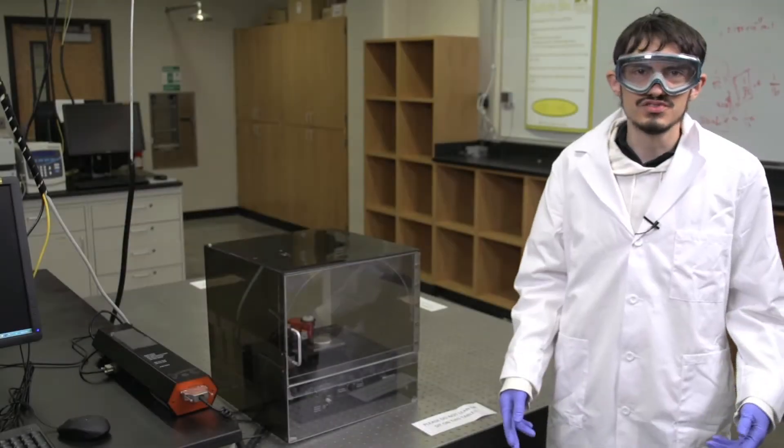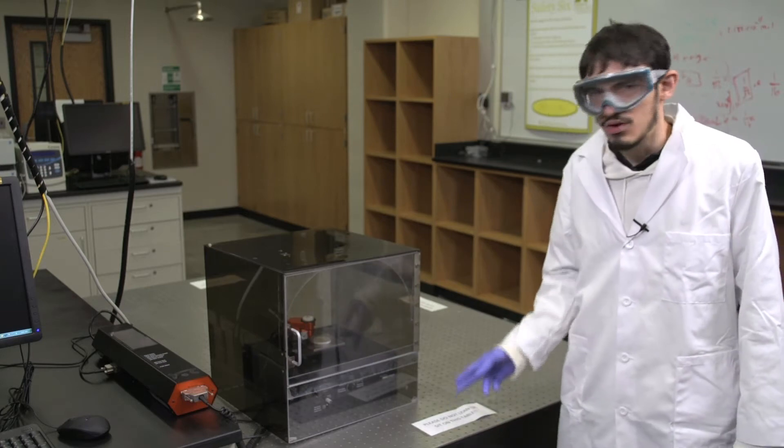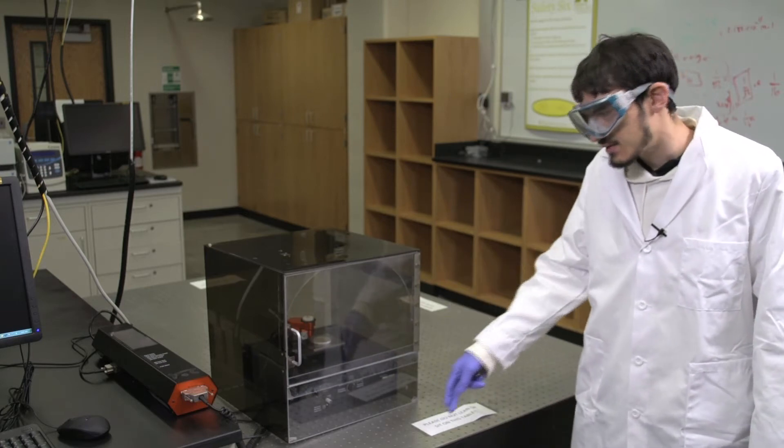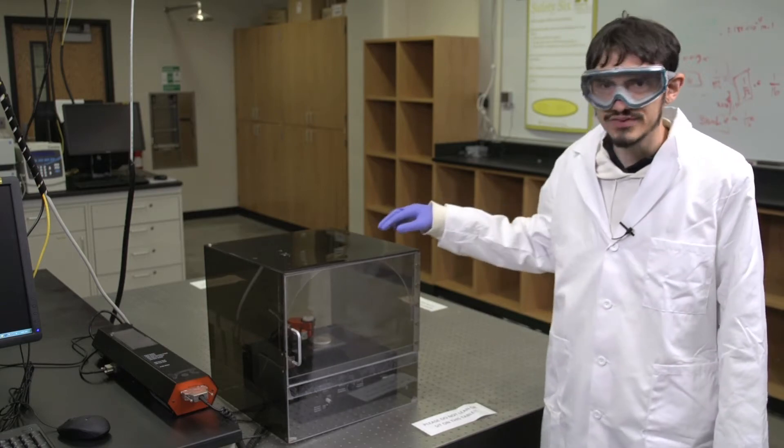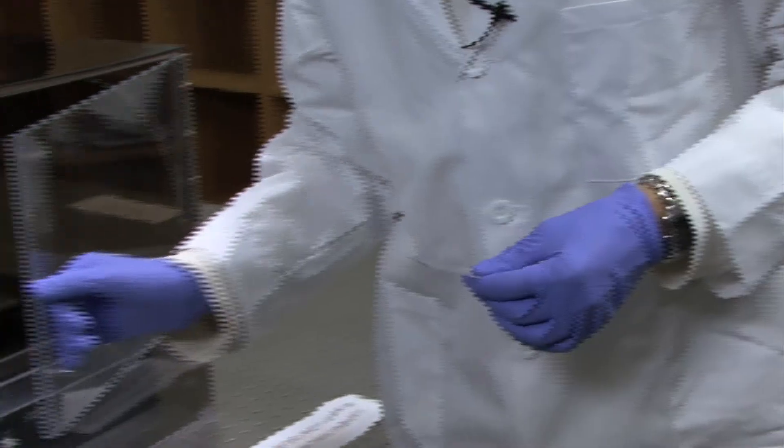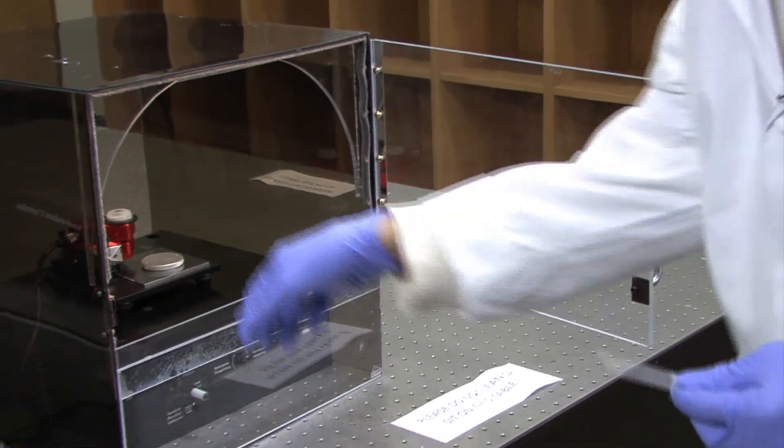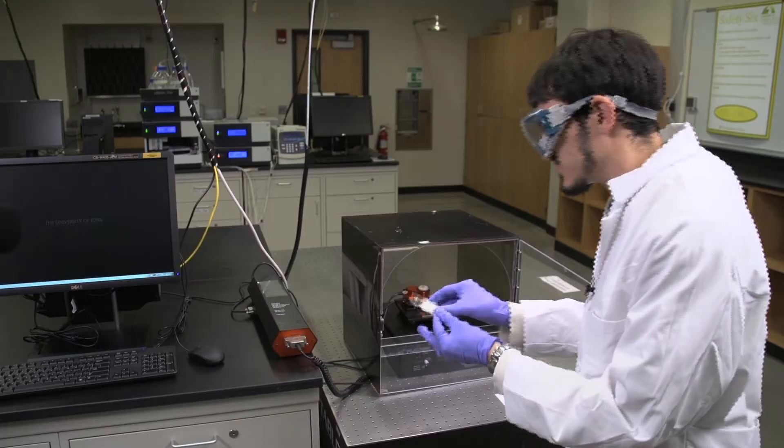When preparing to use the AFM, be sure that you do not lean, sit, or place any objects on this table. The draft box should remain on the AFM at all times unless the tip is being changed. Carefully open the door of the draft box and remove the magnetic sample stage.